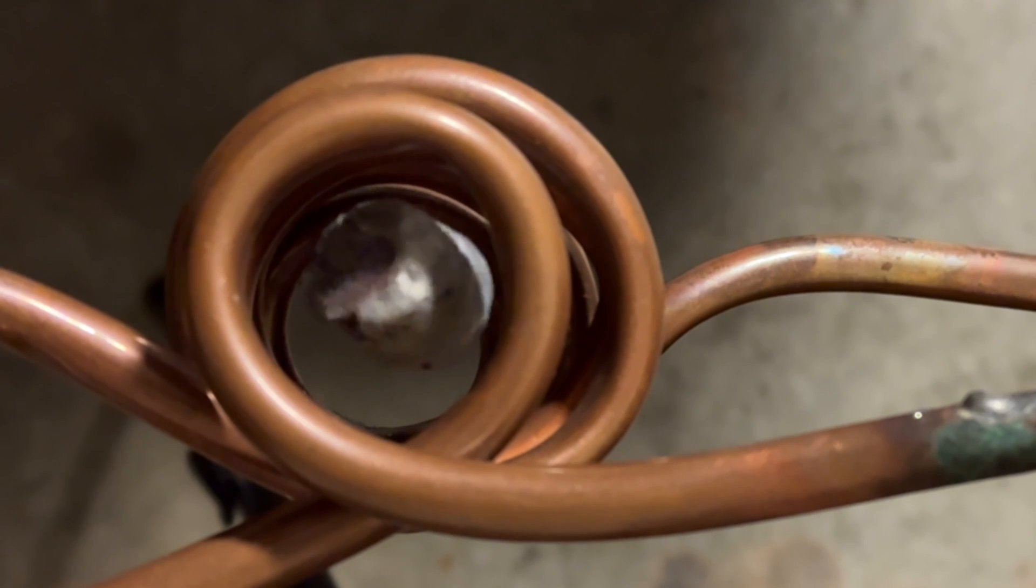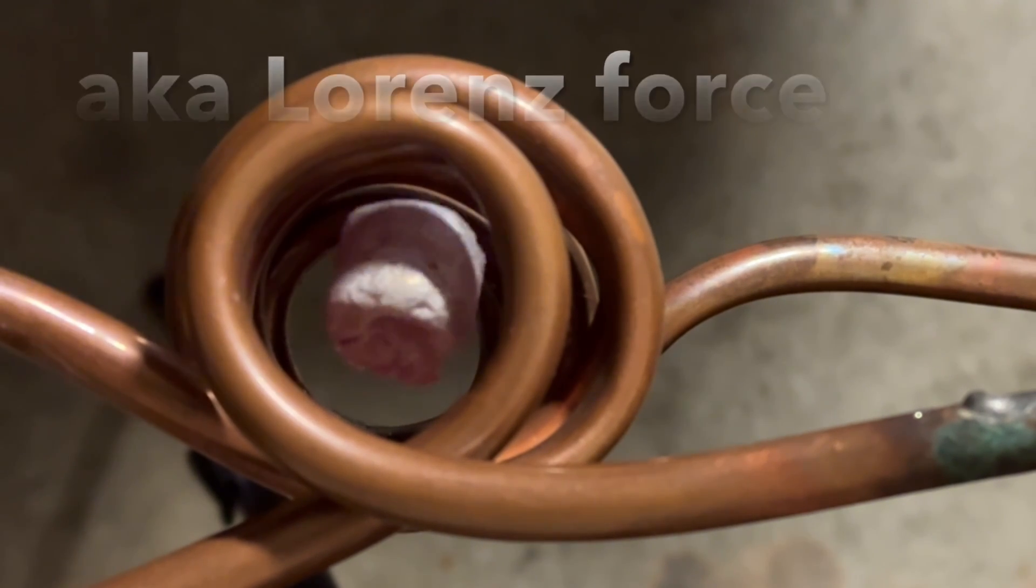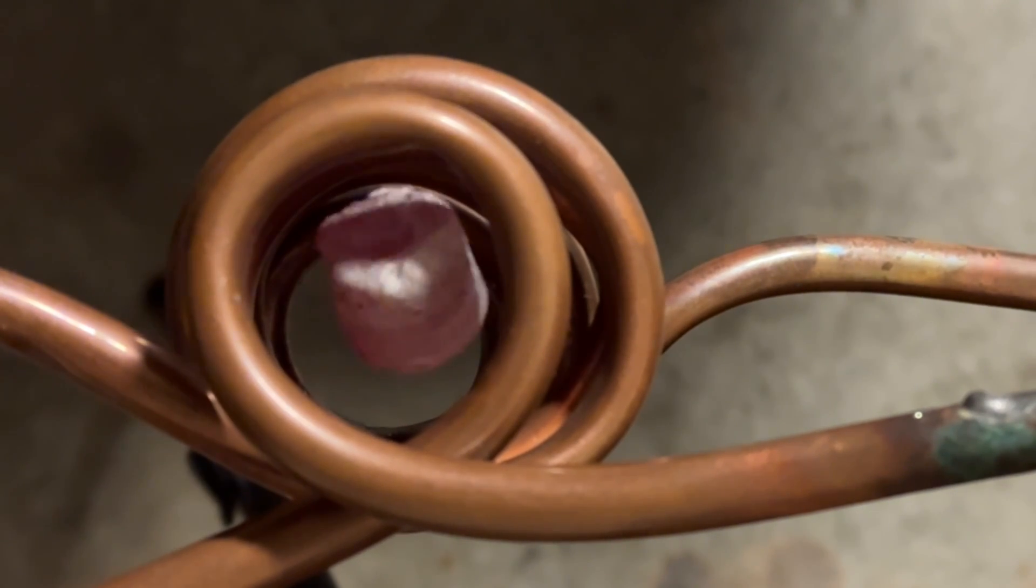This phenomena of metal floating in this coil is caused by eddy currents. The coil has an oscillating magnetic field which induces current to flow in the metal. The flowing current in the metal causes its own magnetic field which opposes that of the coil and results in the metal floating. You'll notice that the upper turn of the coil is wound in the opposite direction to stabilize the metal and prevent it from falling out.